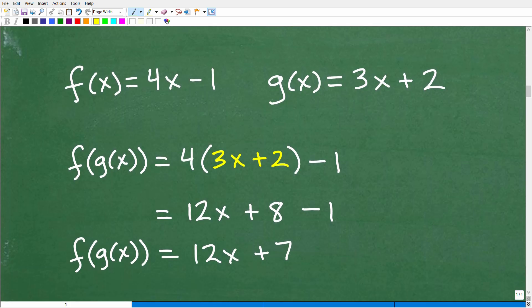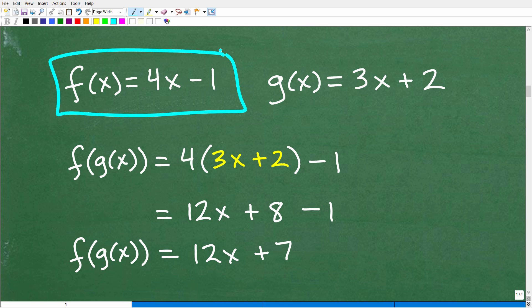So we have f(x) is equal to 4x minus 1. This is our function. And we want to find the composite f(g(x)). Okay. So that means that we're going to be plugging in this function, g(x), into the f function. Now, you might be saying, well, hey, Mr.